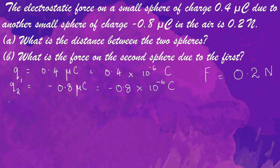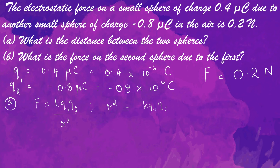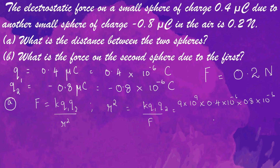The first question asks for the distance between the two spheres. We know that F = K·Q1·Q2 / R². We need to find R, so R² = K·Q1·Q2 / F = 9 × 10⁹ × 0.4 × 10⁻⁶ × 0.8 × 10⁻⁶. Here we only consider the magnitude of the charges, so we do not take the minus sign.